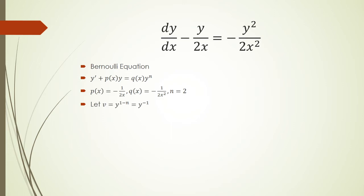So we're going to make a v substitution, where v is y to the 1 minus n. n is 2, that means v is equal to y to the negative 1 power.